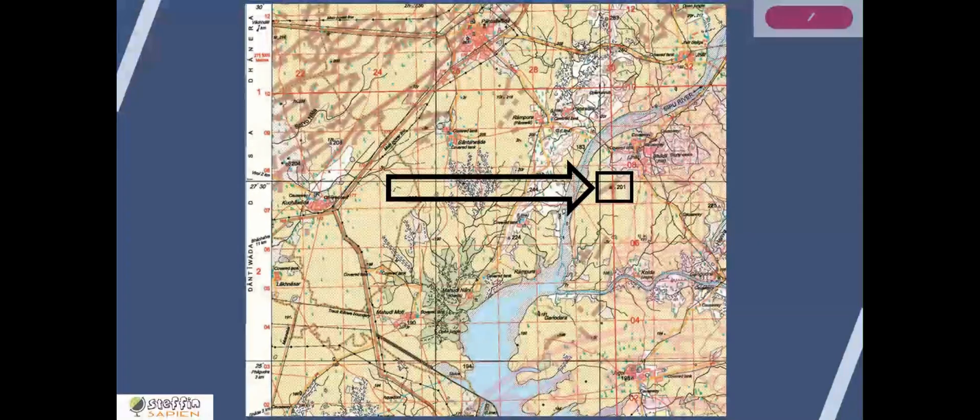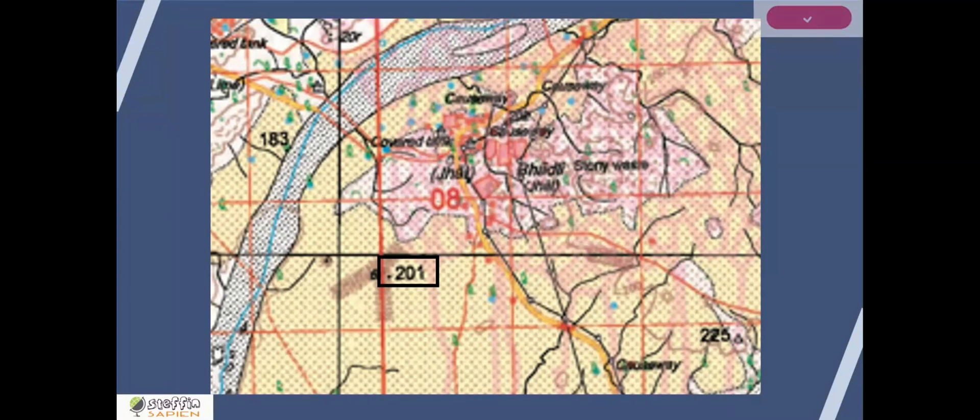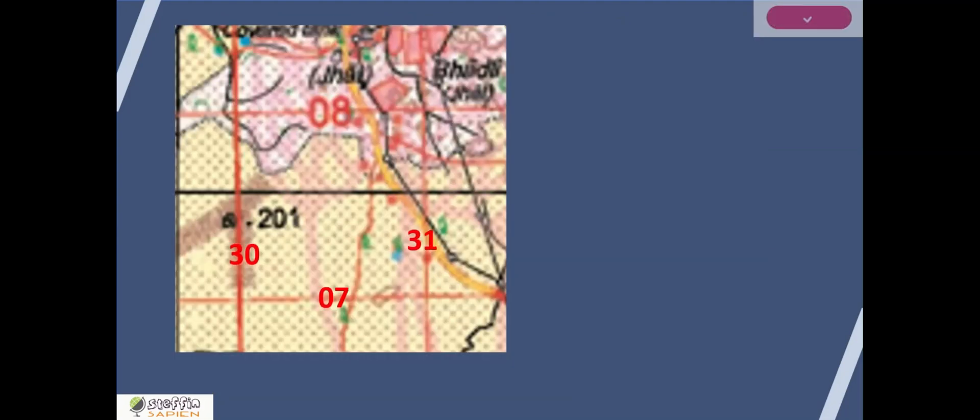The question is to find the six figure grid reference. What we need is this particular grid square with its easting and northing value. Easting is 30 and 31, northing is between 07 and 08. First we will write the four figure reference for the whole grid by leaving a space in between to write the secondary easting and northing. So the four figure reference for this grid square will be 3007.